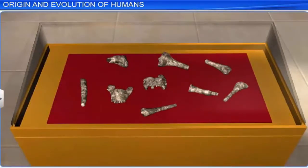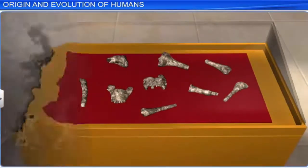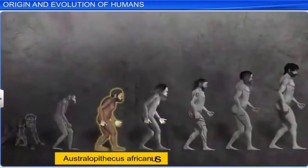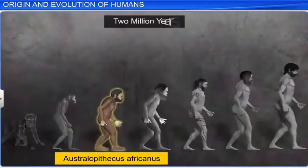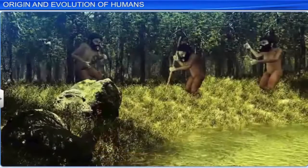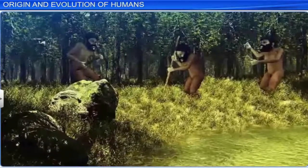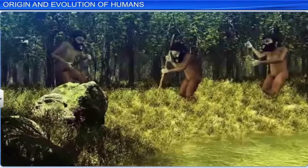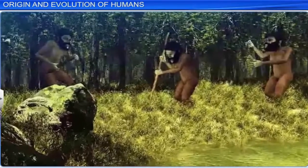The fossils found in the grasslands of East Africa narrated the next stage of the story of human evolution. They suggested that Australopithecines, of the genus Australopithecus africanus, lived here around 2 million years ago. The main feature of the Australopithecines was that they hunted with stones, but were primarily fruit eaters.